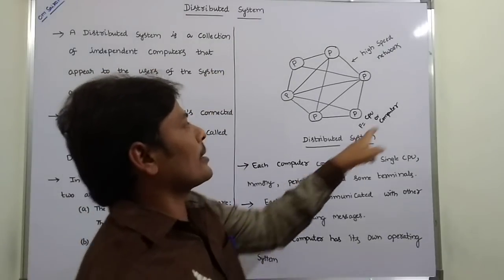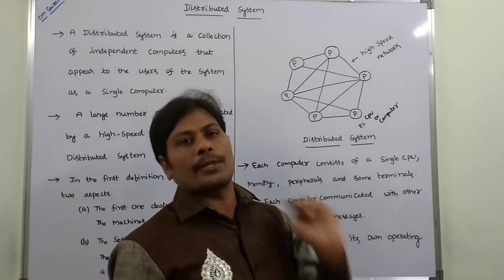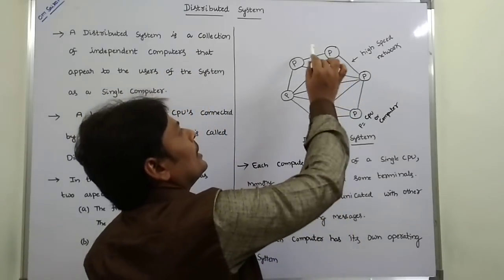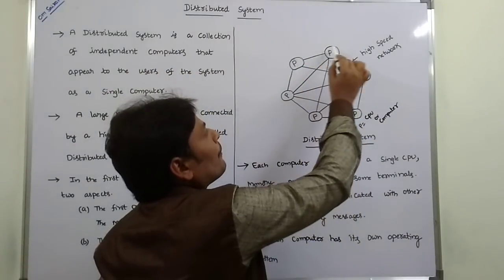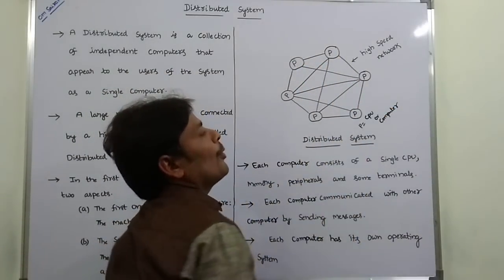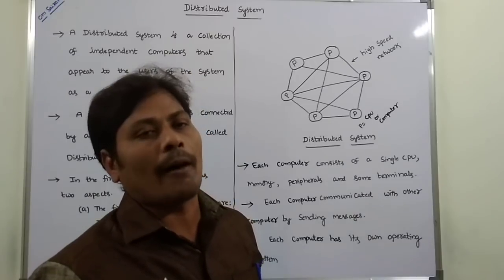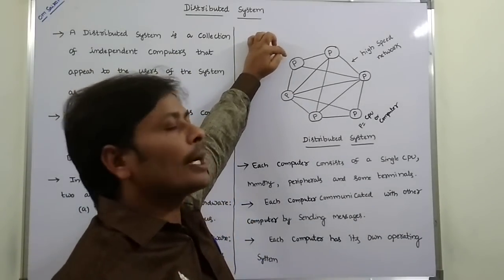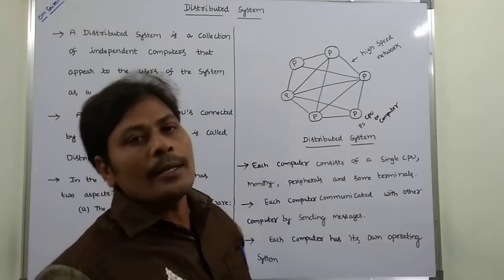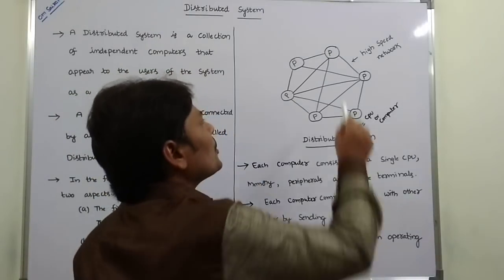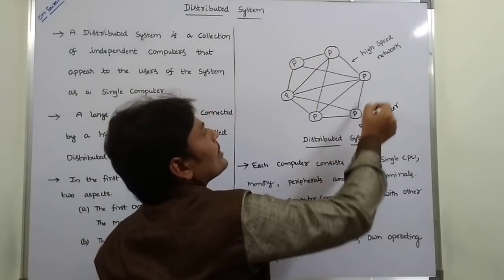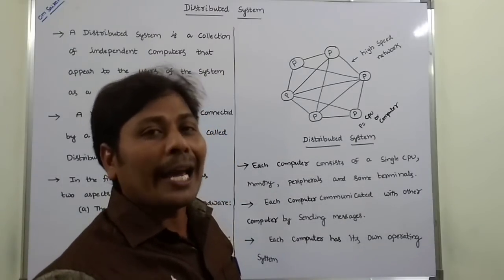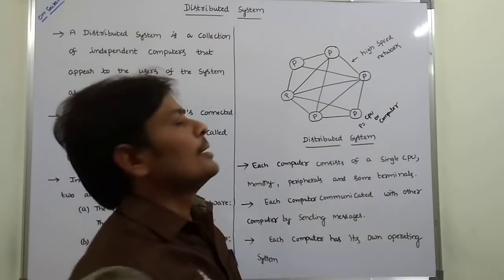For example, consider this Distributed System. In this Distributed System, there are six computers — six CPUs. Here, P represents a computer or a CPU. These six computers are connected by using a high-speed network.